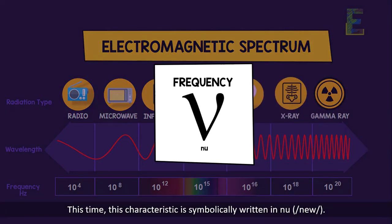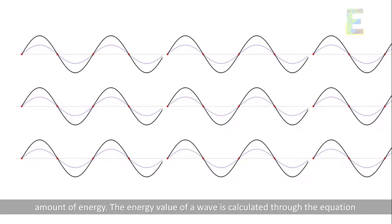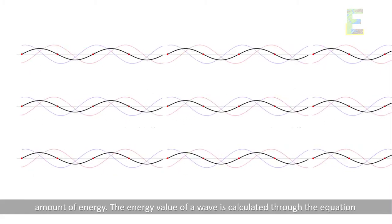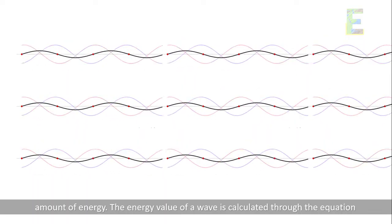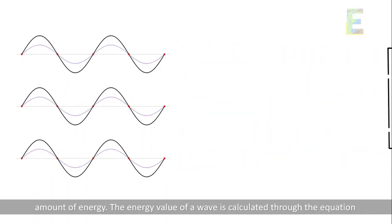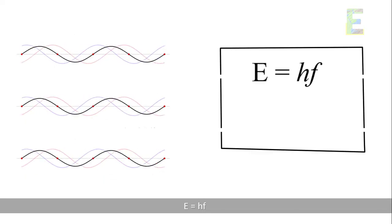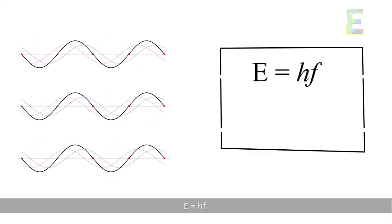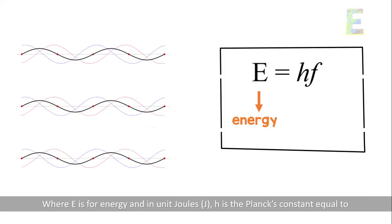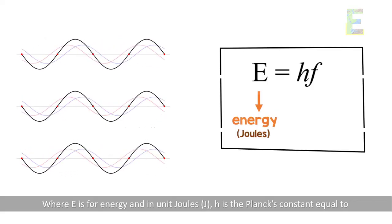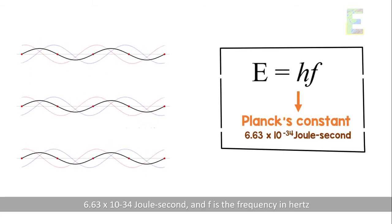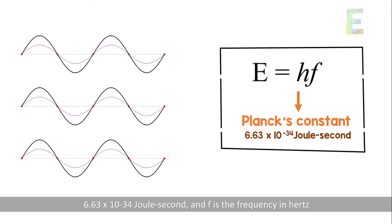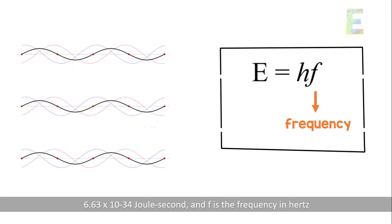Lastly, each electromagnetic radiation wave also corresponds to a definite amount of energy. The energy value of a wave is calculated through the equation E = hf, where E is for energy in units of joules, h is the Planck's constant equal to 6.63×10⁻³⁴ joule-seconds, and f is the frequency in hertz.